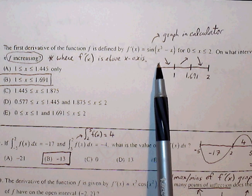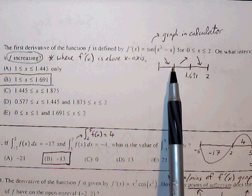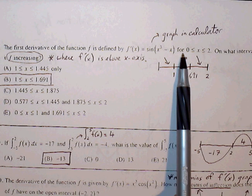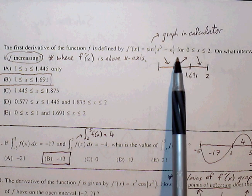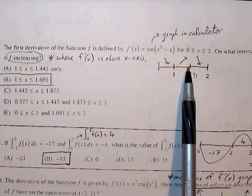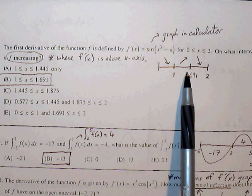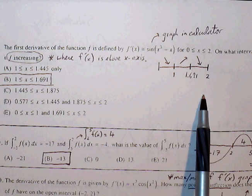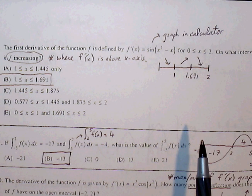And the graph resembles this where it crosses the x-axis at 1, and between 1 and 1.691 the graph is above the axis and it goes back down to the x-intercept at 1.691, and then it dips below the graph. And so our graph will simply be increasing in the interval from 1 to 1.691.